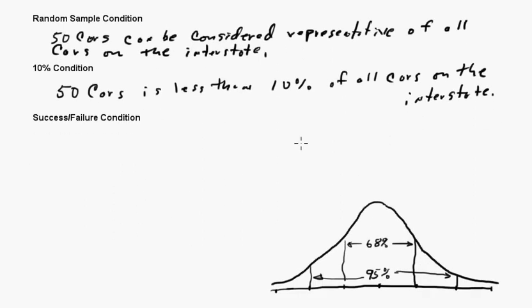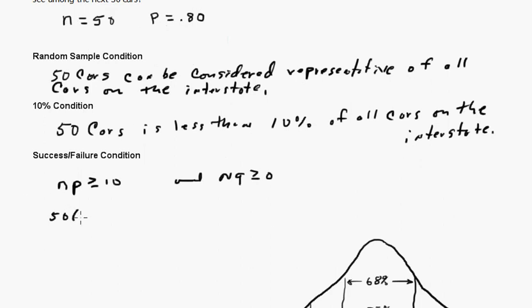The success failure condition, what we want to do is show that NP is greater than or equal to 10, and NQ is greater than or equal to 10. It was 80%, so the sample size is 50, and P was 80%, so 0.80. I think that's going to work, because 80% of 50 is going to be 40, and then 20% is exactly 10.